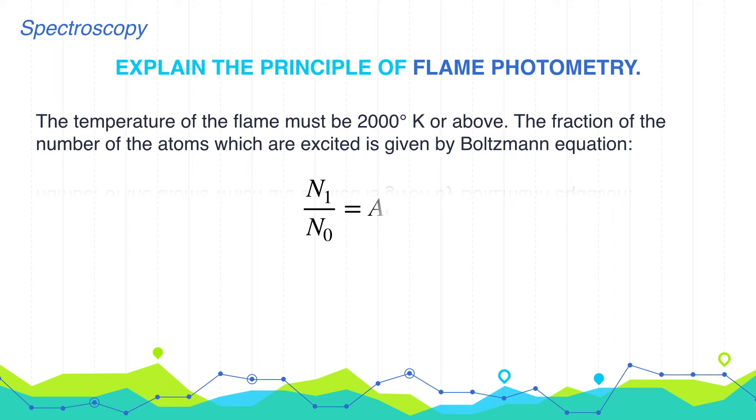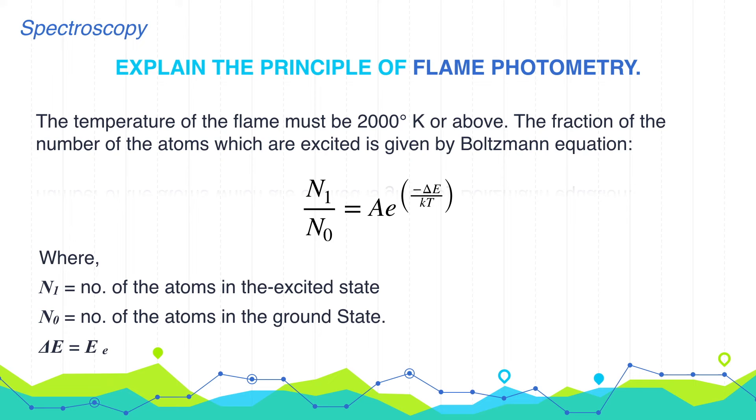Where N1 is the number of atoms in the excited state, N0 is the number of atoms in the ground state, delta E is energy of activation, K is the Boltzmann constant, T is the temperature in degrees Kelvin, and A is the characteristic constant.